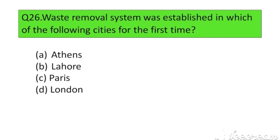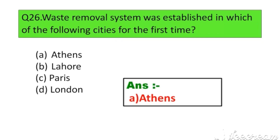Question number 26. Waste removal system was established in which of the following cities for the first time? Option A. Athens, B. Lahore, C. Paris, D. London. The right answer is Option A: Athens.